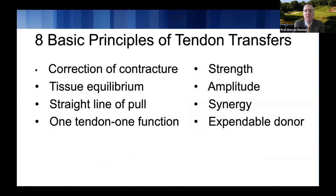There are eight basic principles of tendon transfer that have been taught over time and are tried and true: correction of contracture, tissue equilibrium, a straight line of pull, the principle of one tendon one function, adequate strength and amplitude, a synergistic transfer, and an expendable donor. I'll go through each of these and explain how I think about choosing the right transfer to get the best result.